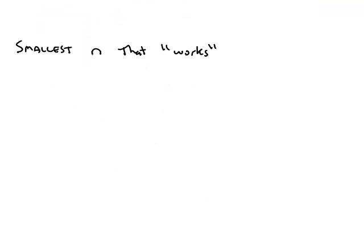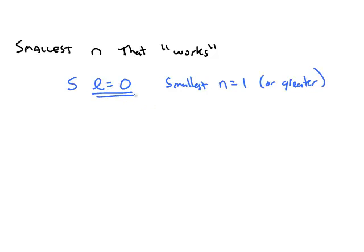We also have to look at more detail about the quantum number code — specifically, the smallest n that works for a given type of orbital. For an S orbital, we know the quantum number L is zero. And if we're talking about an orbital with L equals zero, the smallest n that could possibly work is n equals one. Anything greater than one will also work. For example, if n is eight, L can be zero, one, two, three, four, five, six, or seven — anything up to n minus one.